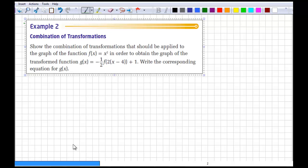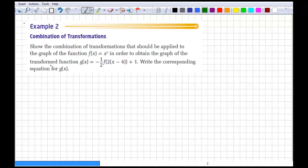Alright. For example 2, we're going to show the combination of transformations that should be applied to the graph of the function f(x) equals x squared. In order to obtain the graph of the transformed function g(x) equal to negative 1 half f of 2 times (x minus 4) plus 1. Then we'll write the corresponding equation for g(x) using the x squared part. Okay. So, this shows the transformation. This shows what happened to f(x). And then when we write g(x), we'll have g(x) is equal to negative 1 half, etc. Okay. So, let's take a look at that.